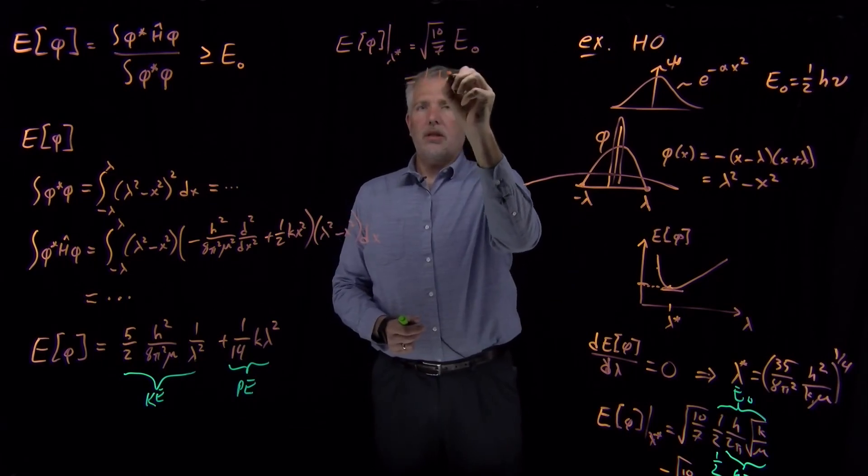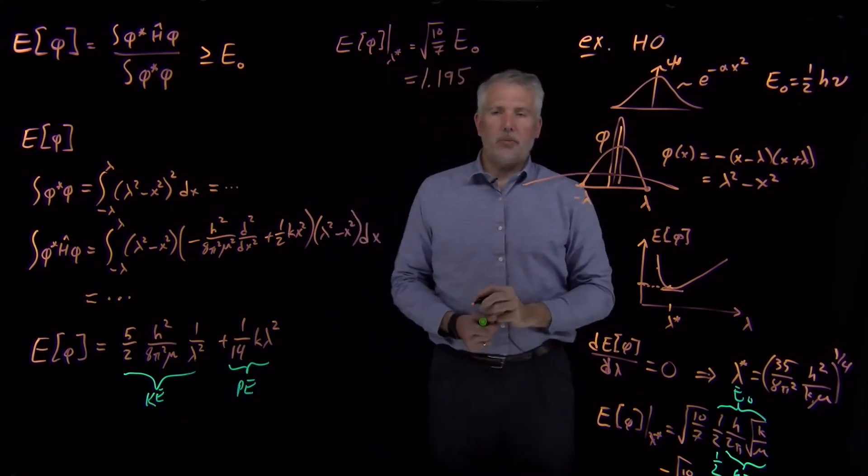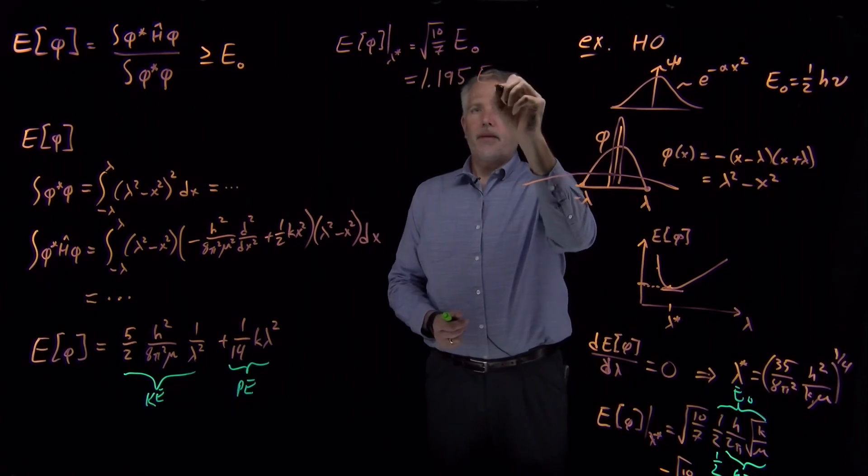Or, square root of 10 over 7 is about 1.195.